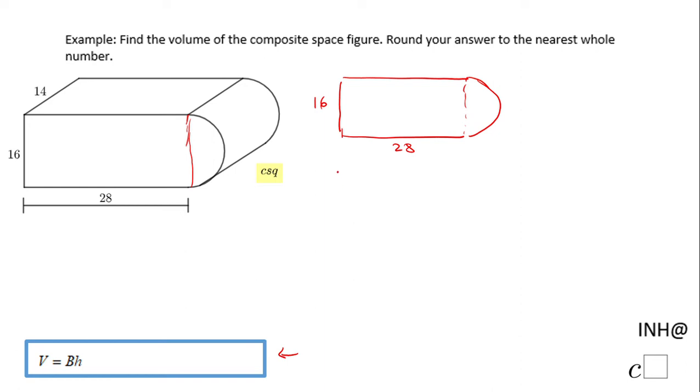In order to find the area of the base B, we need to find the area of the rectangle, which is this rectangle, 16 by 28. So the area of this rectangle will be 16 times 28, which is 448 square units.